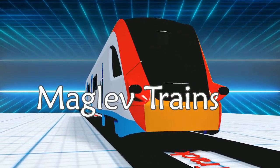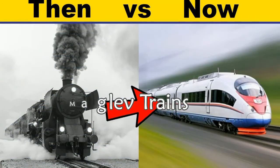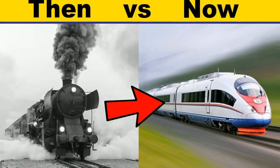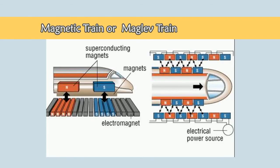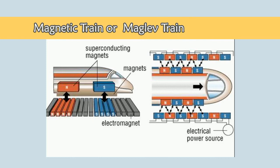The evolution of mass transportation has fundamentally shifted human civilization. In the 21st century, there are few countries using powerful electromagnets to develop high-speed trains, called maglev trains.